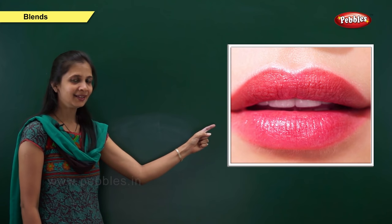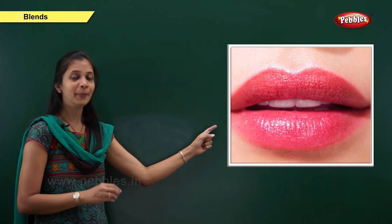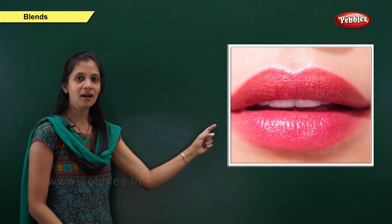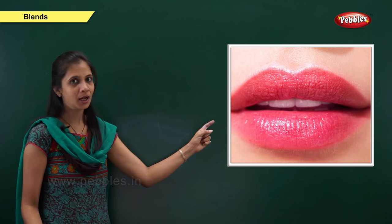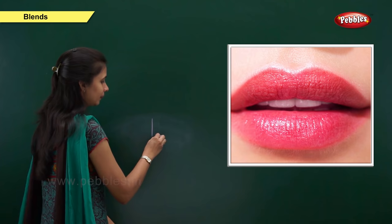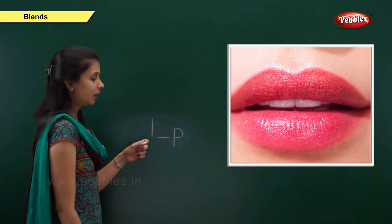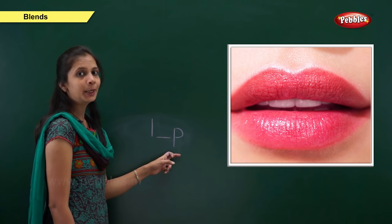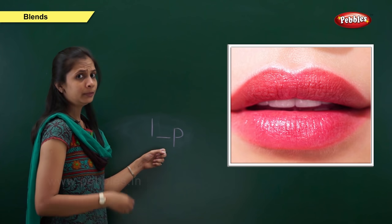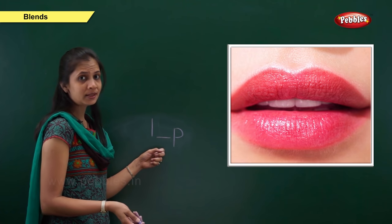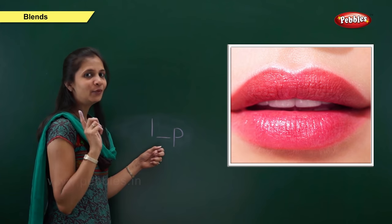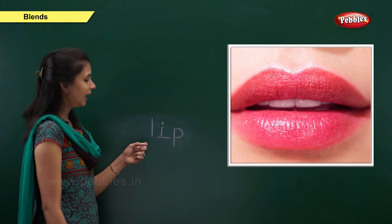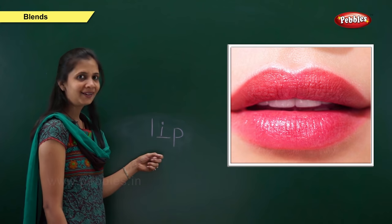Next one. Now, what is it? Yes, it is the picture of lip. What is the sound of it? It is l, e, pa. When the sound is 'l', the letter is l. When the sound is 'pa', the letter is p. What about the middle sound? Middle sound is 'e'. The letter is the vowel i. So: l, e, pa — lip. L, i, p — lip.